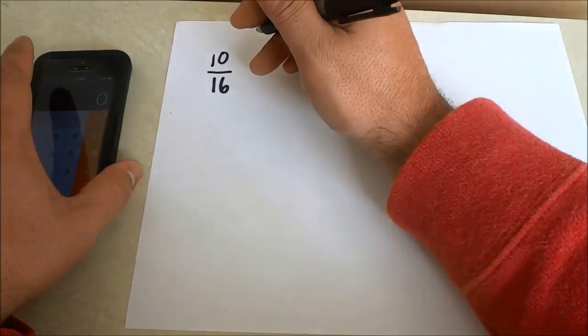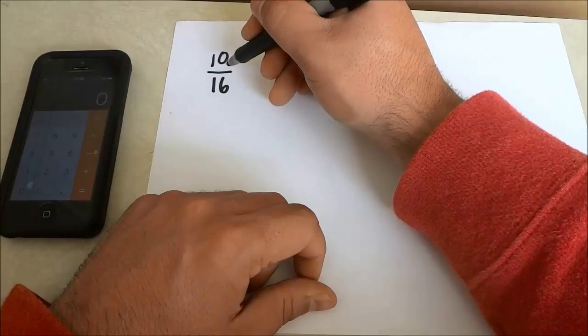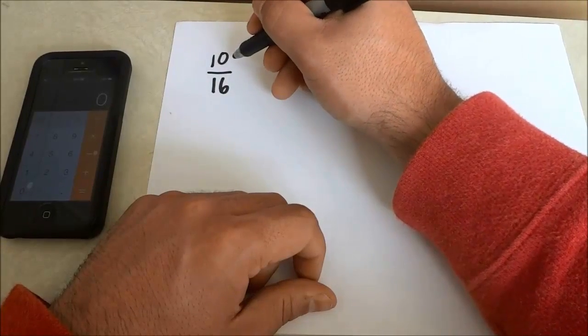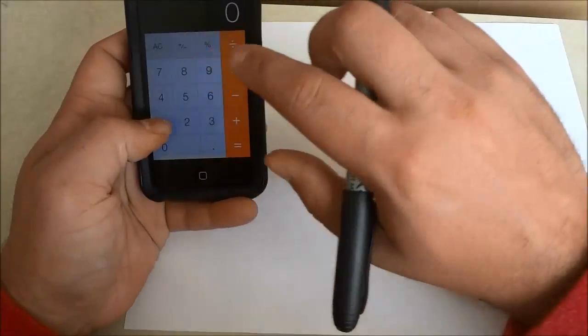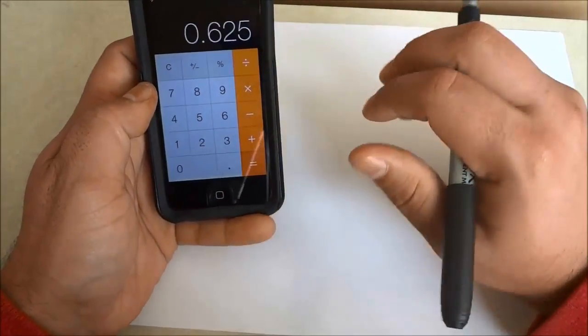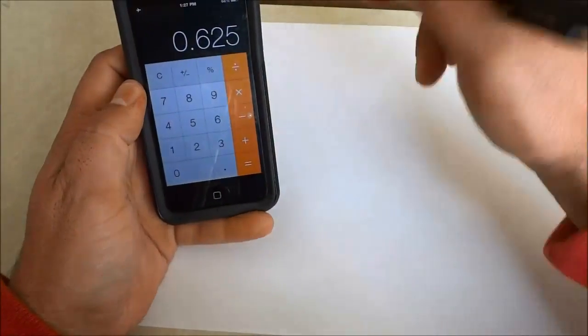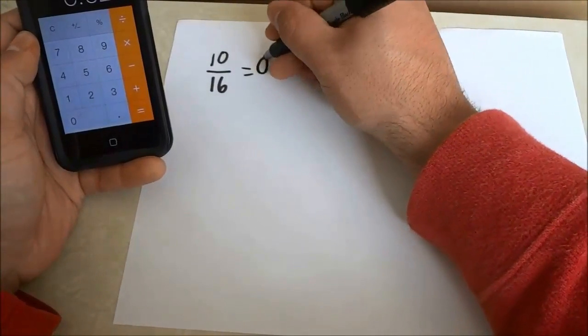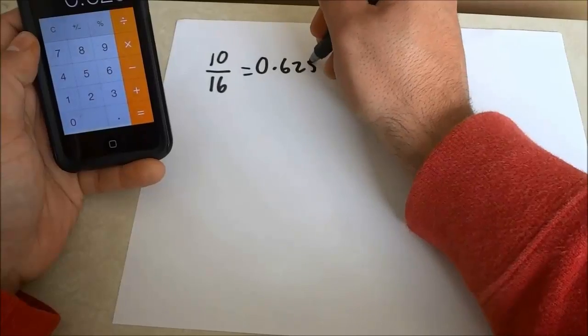So the first step is to divide the top number by the bottom number. So I'm just going to do 10 divided by 16 and I'll just do it on the calculator right here. 10 divided by 16 equals 0.625.